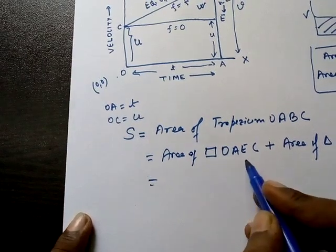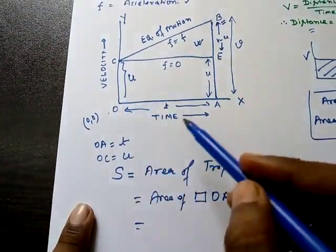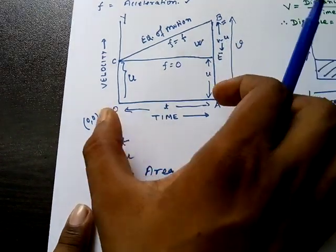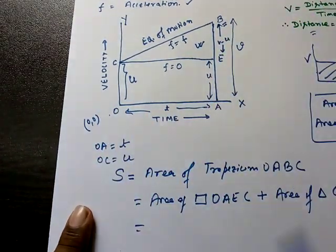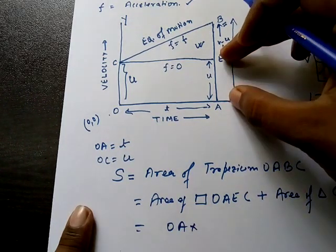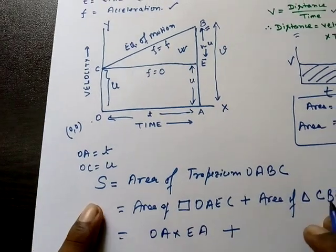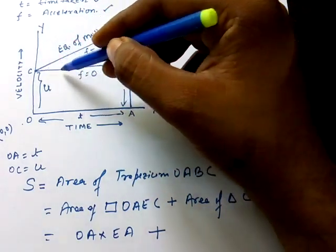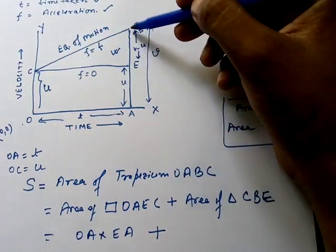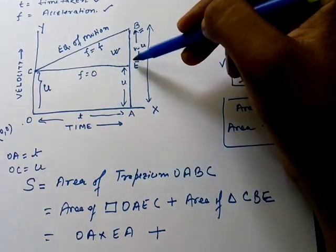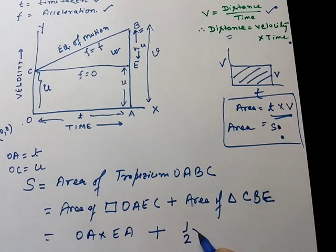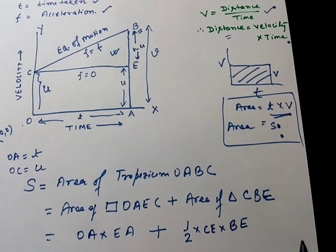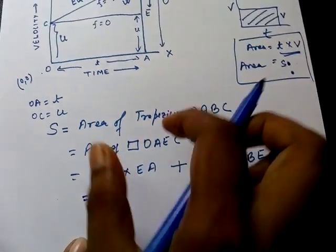The area of the trapezium can be split into two parts: the area of rectangle OAEC, plus the area of triangle CBE. The area of rectangle OAEC equals length times breadth. OA is the length equal to t, and EA is the breadth equal to u.